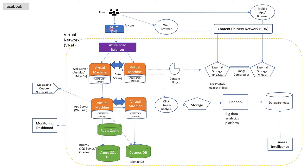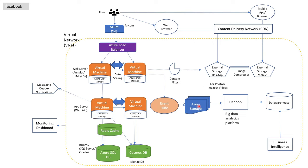If you observe carefully, the naming conventions of Azure services are quite similar to the generic naming conventions of the services, which makes it very easy to remember and learn. Moving forward, we will replace click stream analysis with Event Hubs, which will basically record all the user activities or clicks on the Facebook website. Next, the storage will simply be called Azure Storage in Azure. The storage can be of different types like blob storage, file storage, and table storage.